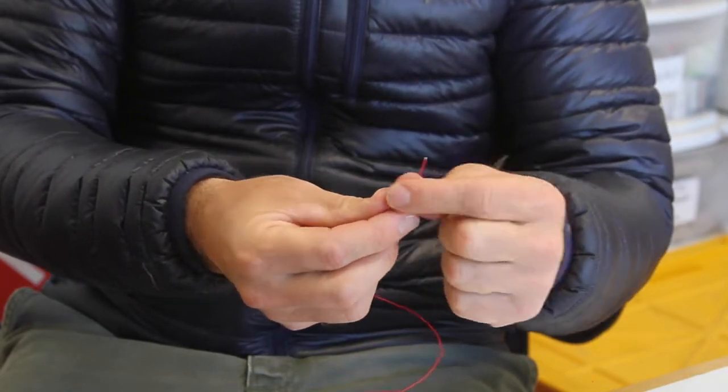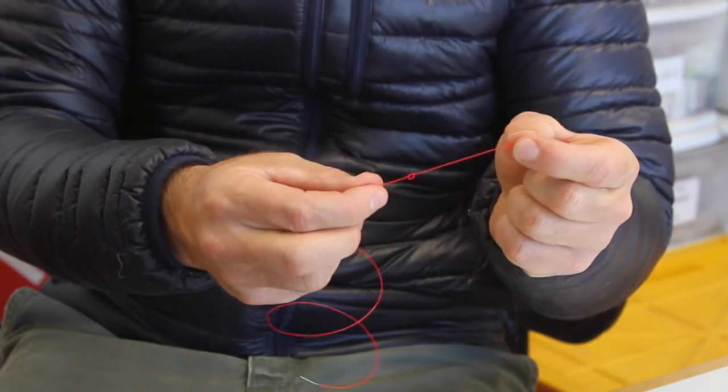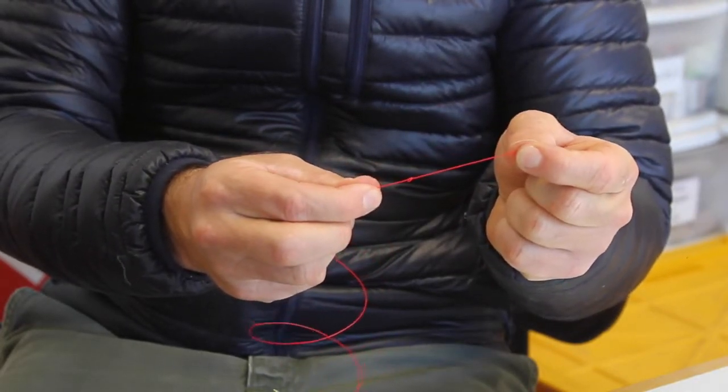First, we're going to take the line and tie an overhand knot without closing it, but pull it to a workable size.